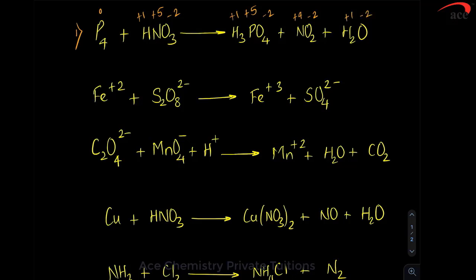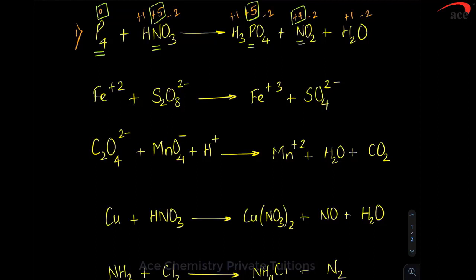As an observer, what you are able to see is that the oxidation number of phosphorus is undergoing a change. So phosphorus will be very critical in balancing this redox reaction. We are also able to identify that nitrogen is undergoing an oxidation state change. So phosphorus and nitrogen will be responsible for balancing this redox reaction. This is one of the easiest types and we will call it Type A.